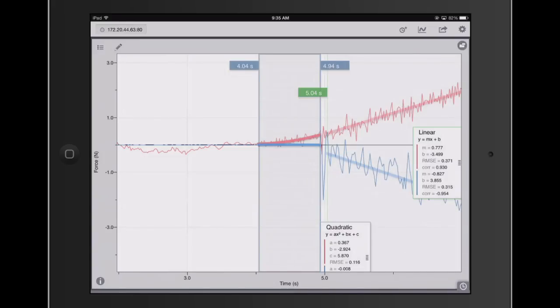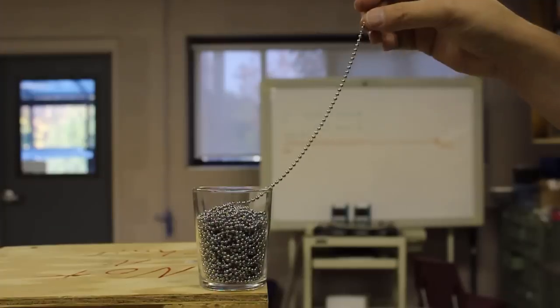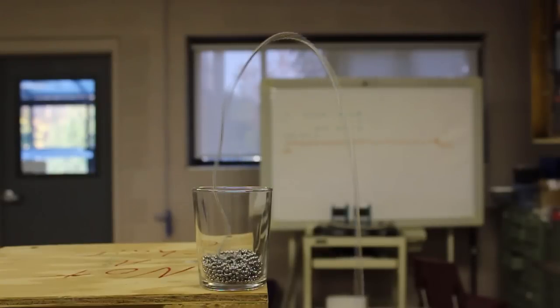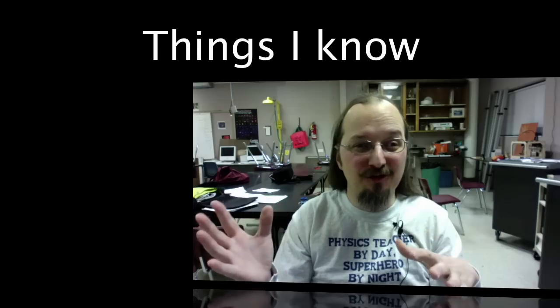So let's look at some other things that I've kind of figured out along the way. This loop doesn't form until the chain gets to the bottom. That is to say, it's accelerating, and as soon as it stops accelerating that loop forms because the chain's gotten to the bottom. Kind of cool.